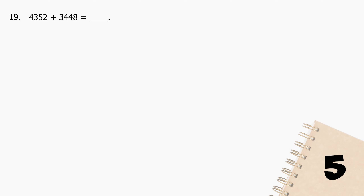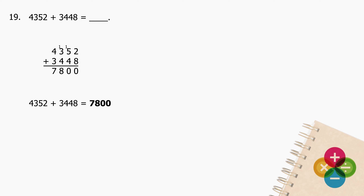Question 19: Add 4352 to 3448 and the sum equals the missing number. The sum is 7800.